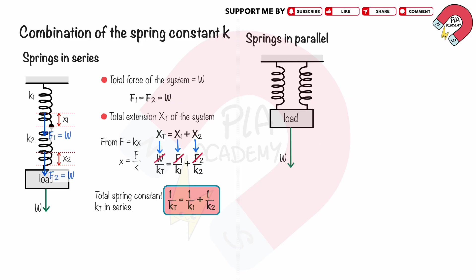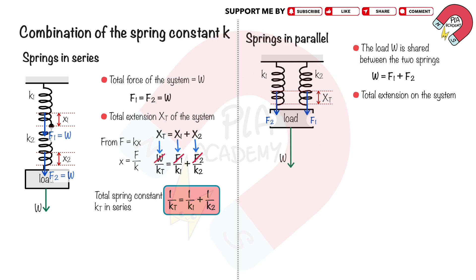Springs in parallel: consider two springs connected in parallel. Let their spring constants be K1 and K2. A load of weight W is hung from the combined spring system. In this configuration, the load W is shared between the two springs. Therefore, W equals F1 plus F2. Because the springs are connected in parallel, they both experience the same extension XT, so total extension XT equals X1 equals X2.